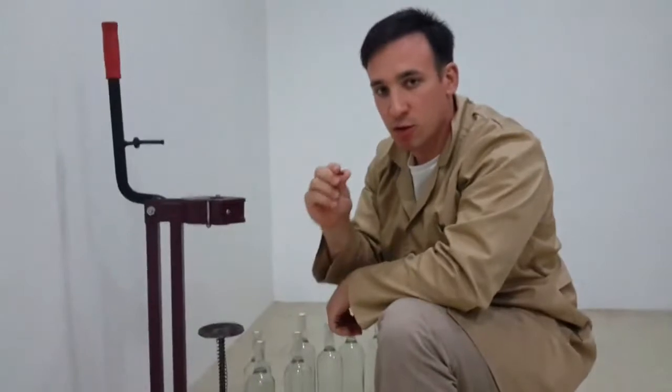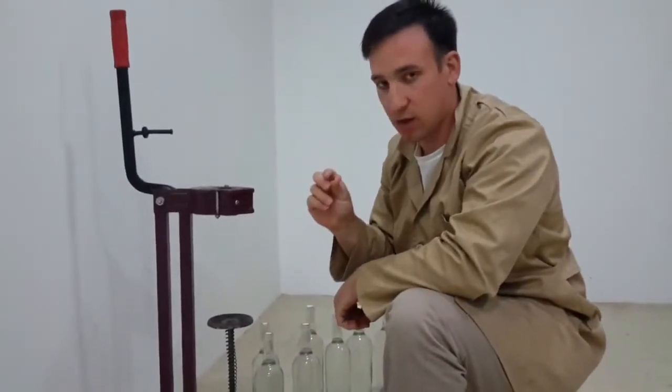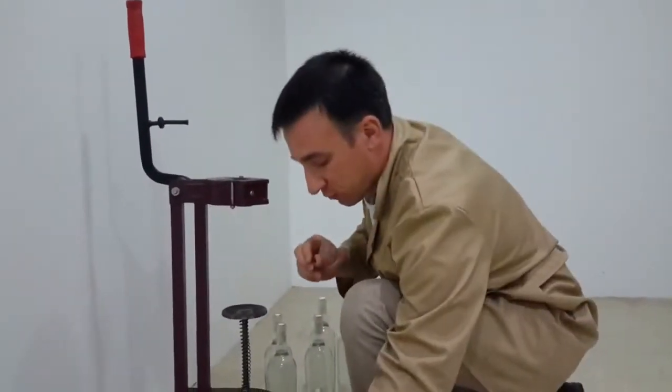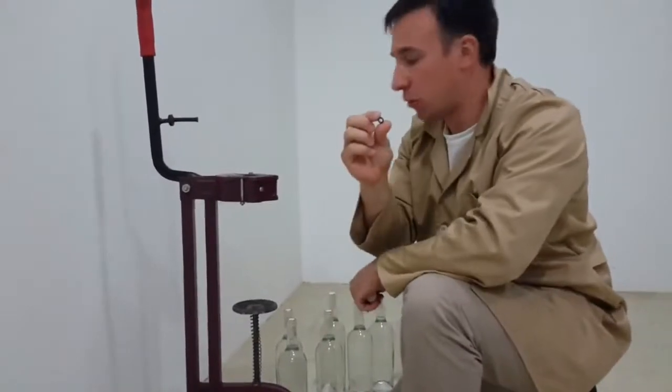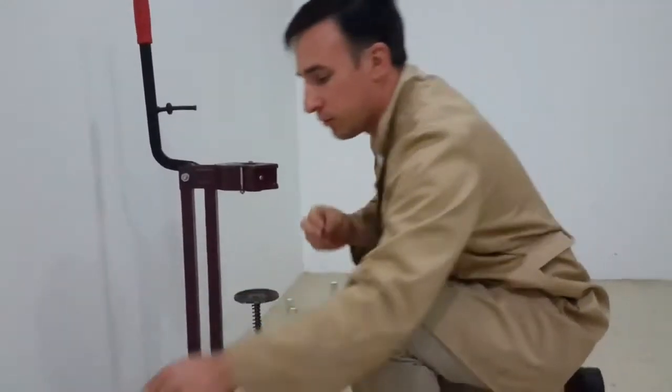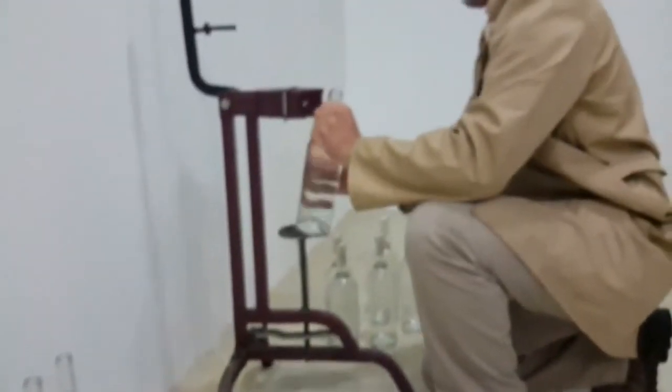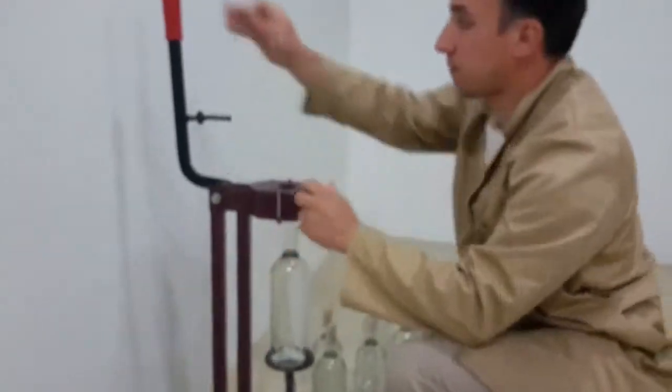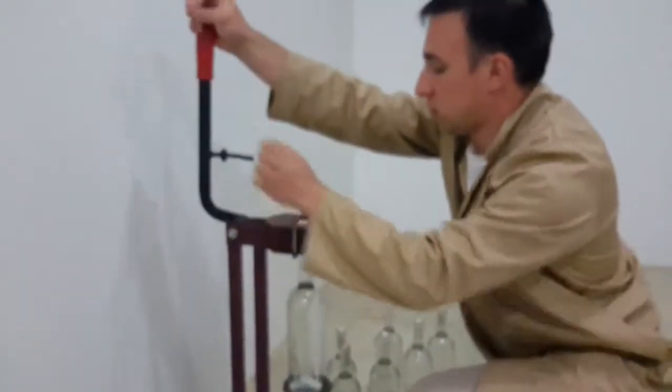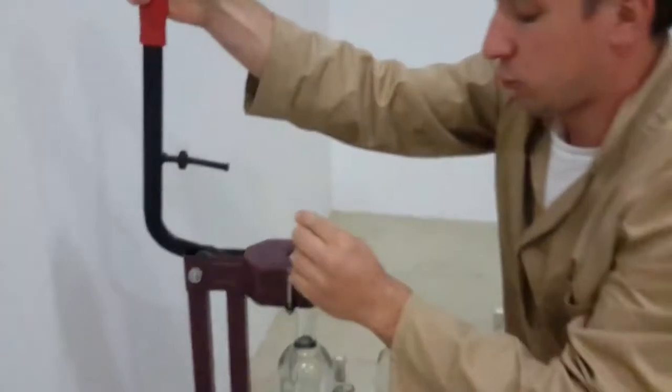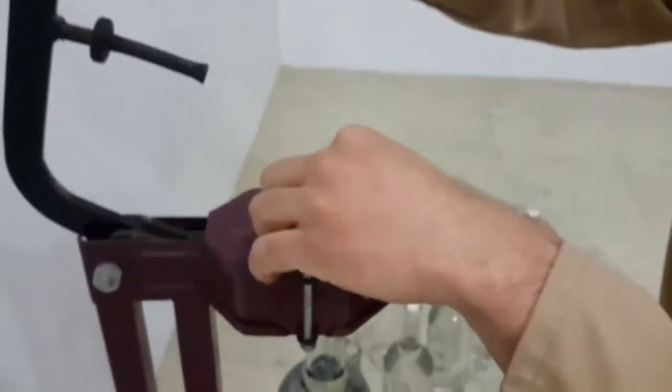Also there is a small trick to make the bottling look like a professional bottling. You can use this small ring or a small coin and put it over the top of the cork.